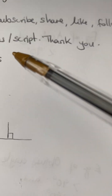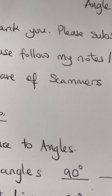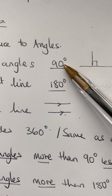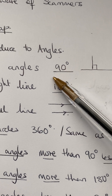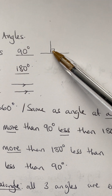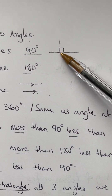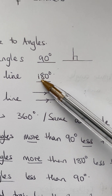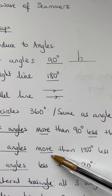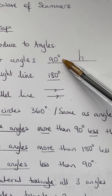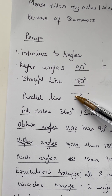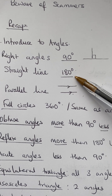Please follow my notes and script — I always write this in the comment section. For instance, 90 degrees means right angles, and 180 degrees is angles, not temperature. It will be advisable to listen but also to follow where the pen is going.